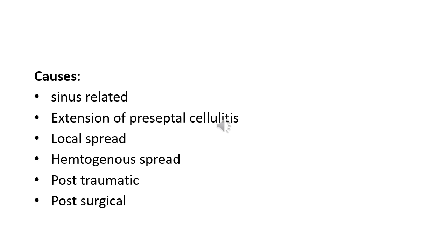The causes of orbital cellulitis: (1) sinus-related — most commonly ethmoidal sinusitis, typically affecting children and young adults; (2) extension of preseptal cellulitis through the orbital septum; (3) local spread from adjacent dacryocystitis, mid-facial, or dental infection — possibly via intermediary maxillary sinusitis; (4) hematogenous spread; (5) post-traumatic — developing within 72 hours of injury penetrating the orbital septum; (6) post-surgical — following retinal, lacrimal, or orbital surgery.